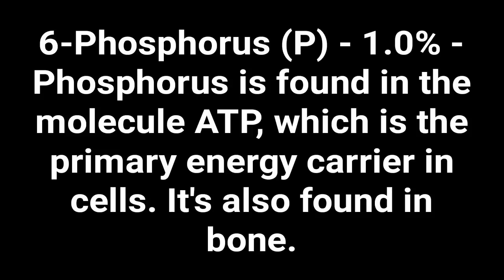Number six: phosphorus — one percent of the human body. Phosphorus is found in the molecule ATP, which is the primary energy carrier in cells. It is also found in bones.